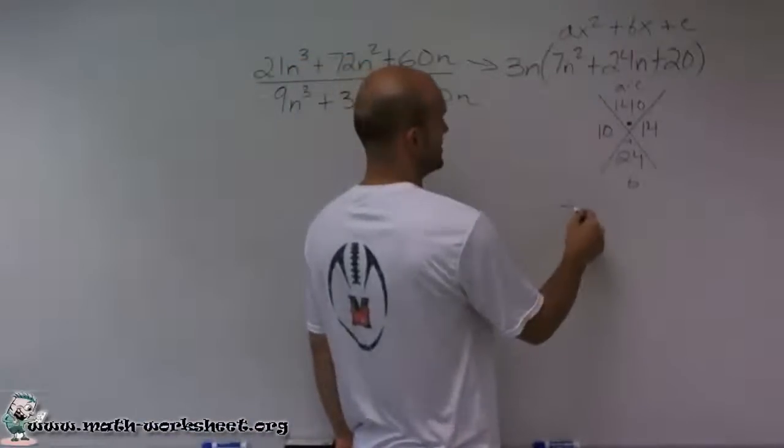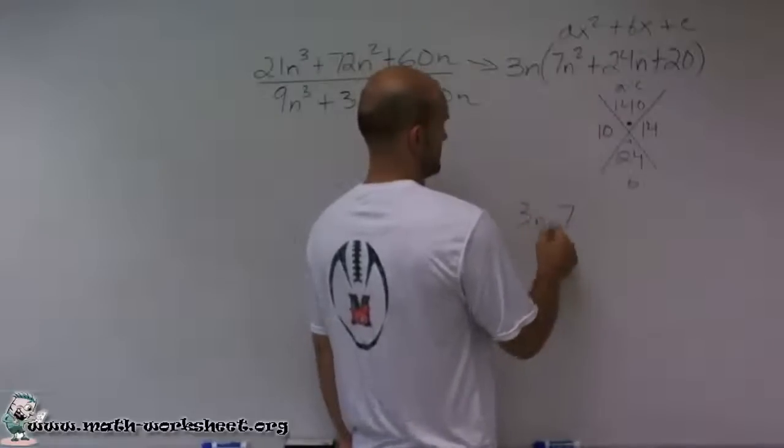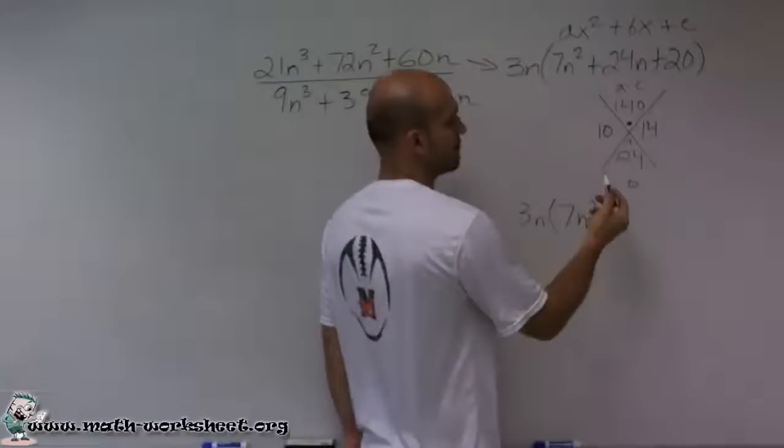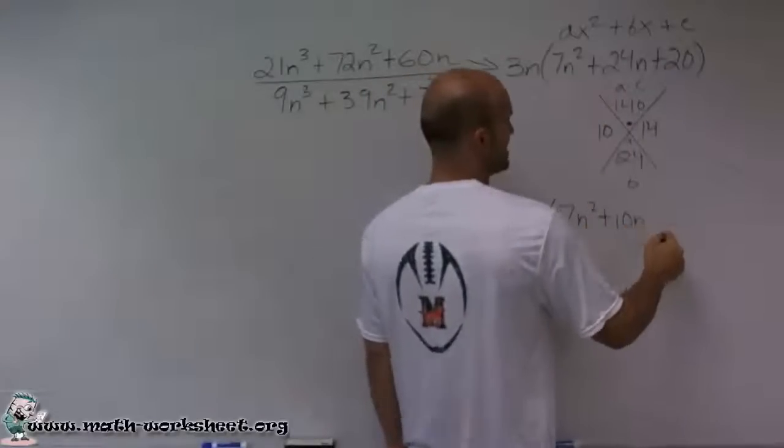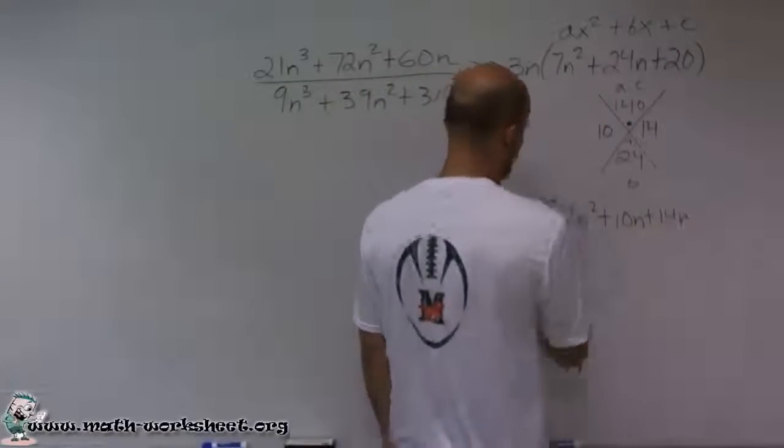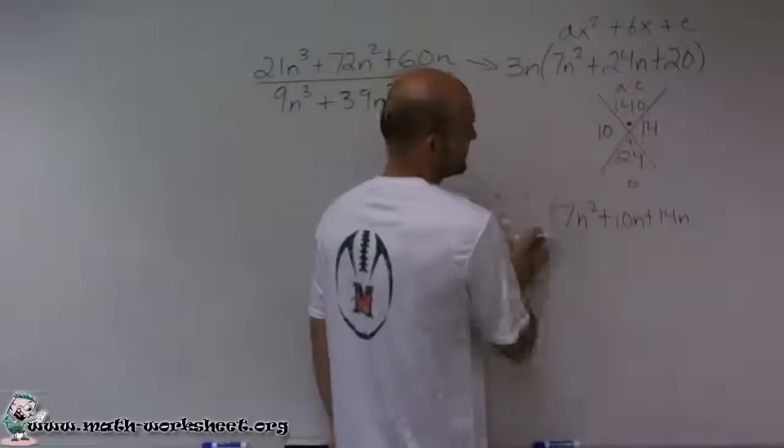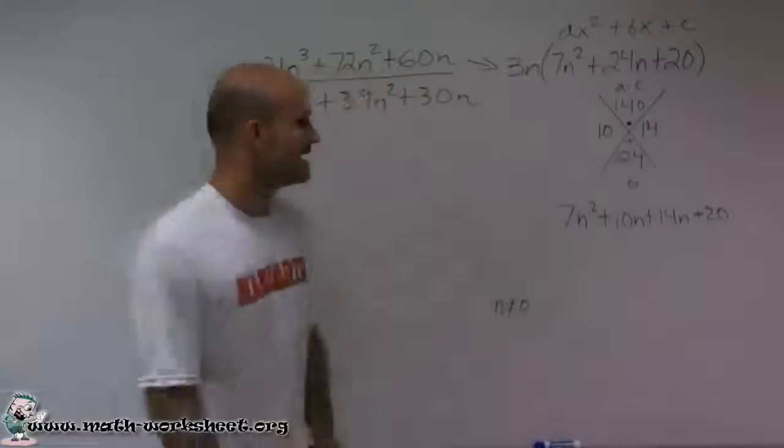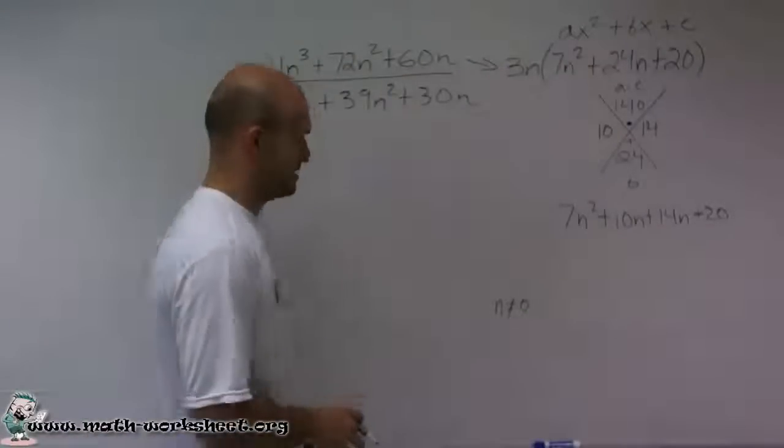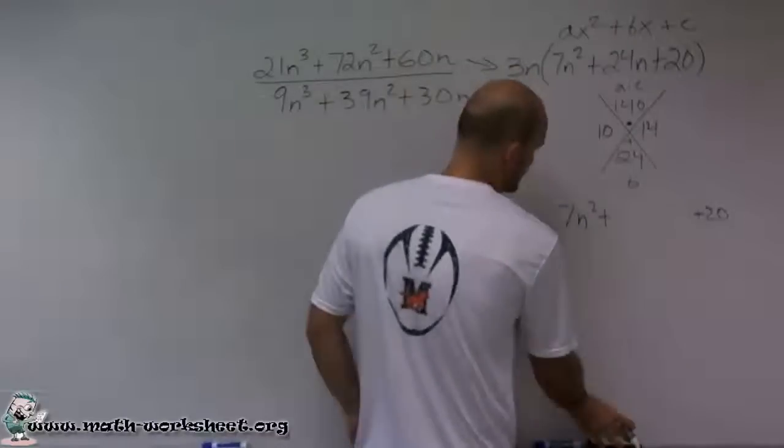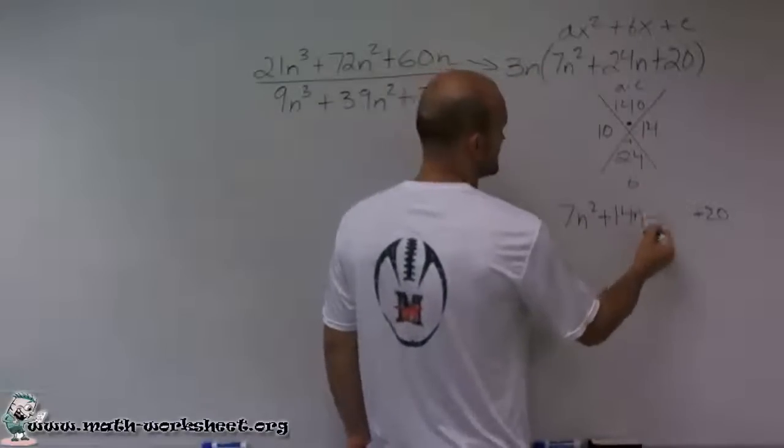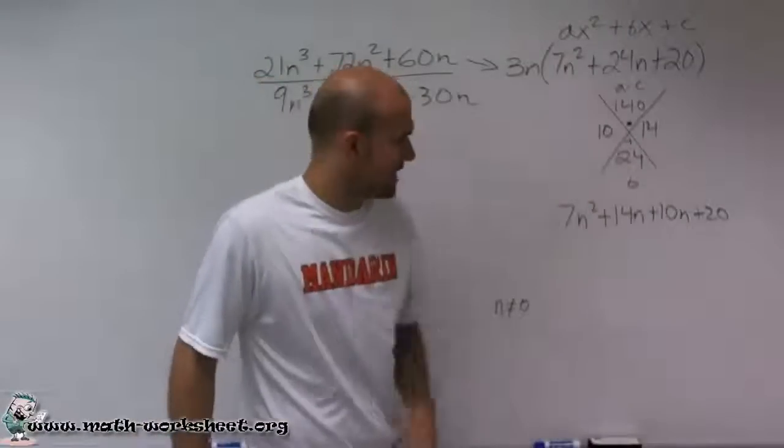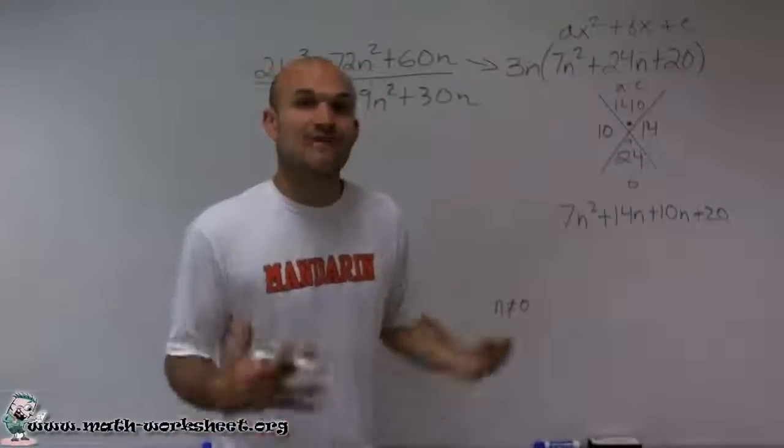Then what I could do is I could rewrite this as 7n squared plus, instead of writing 24n, I could write 10n plus 14n. Actually, let's not write that in there. Let's just work on this factor right here, plus 20. And the reason why, that's going to be a little more difficult. So what I'll do is I'll rewrite it as 14n plus 10n. And you'll see why I did that in a second. So I rewrote that, and now what I can do is factor by grouping.